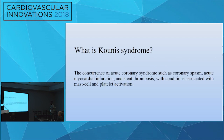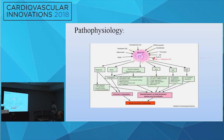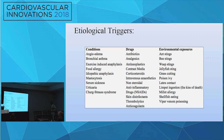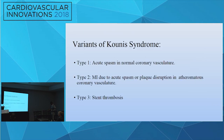Kounis syndrome is basically the concurrence of acute coronary syndrome — such as coronary spasm, acute myocardial infarction, and stent thrombosis — with conditions associated with mast cell and platelet activation. This is the brief pathophysiology involving allergic mast cell and histamine activation. Three types: type 1 in normal coronary arteries, type 2 in atherosclerotic coronary vasculature, and type 3, which is stent thrombosis.